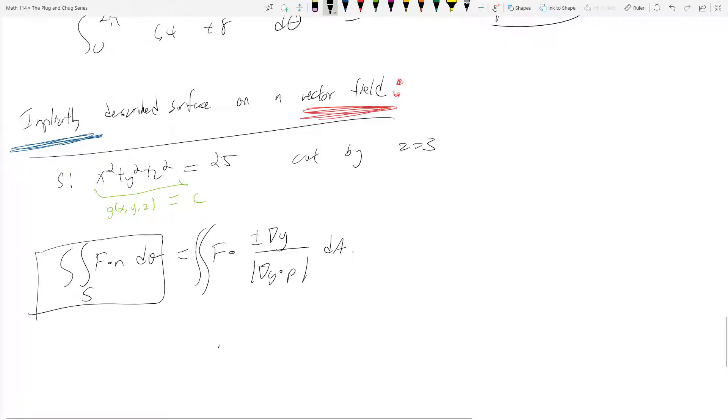So what is then our formula? So when we have an implicitly described surface on a vector field, we have this following formula. This guy's flux, the double integral of F dot n dσ, is equal to the double integral of F dot plus or minus the gradient of g over the magnitude of gradient g dot p. I remember what's p, p is essentially just the random normal vector you choose, depending on what dA is. So if you want dx dy, you choose p to be 0, 0, 1. If you want dy dz, you choose p to be 1, 0, 0.